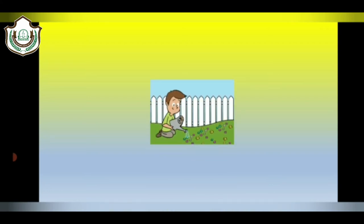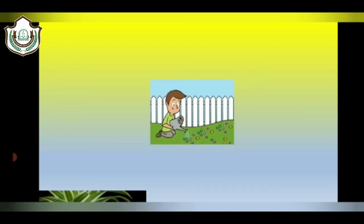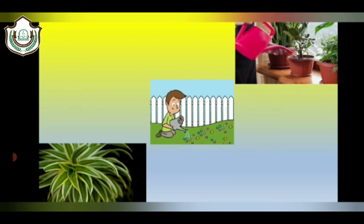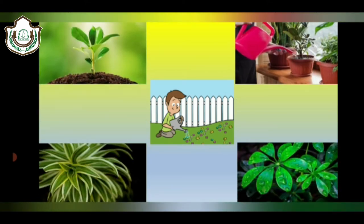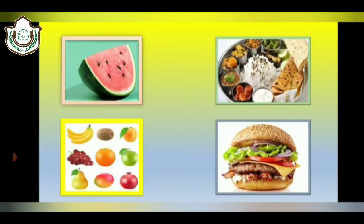Plants are very important for us. Firstly, they are important for the air we breathe. Plants release oxygen which we breathe in and help us to survive. Secondly, plants provide delicious food and fruits like juicy watermelon and yummy lettuce in our burger. Do you know that there are more than tree-like plant species around the world?